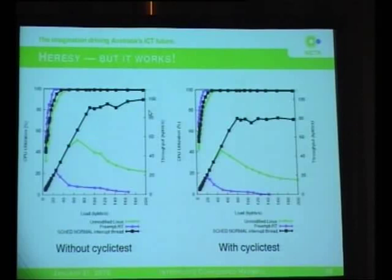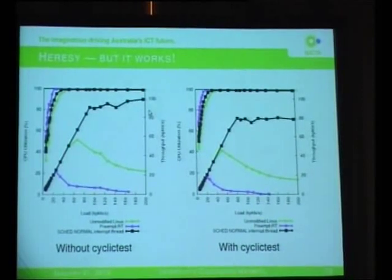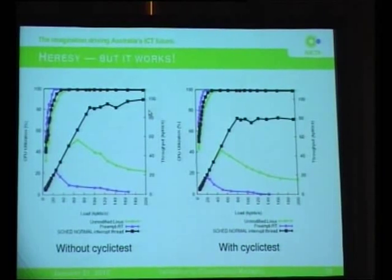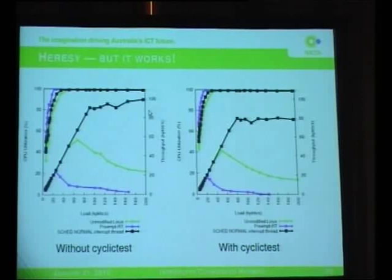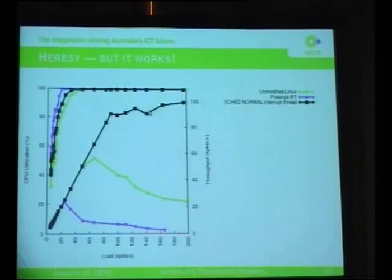This means that cyclic test is now the only real-time task and theoretically it should get good latencies. And we got a hundred kilopackets per second - that is really neat. In the un-overloaded system, the curve tracks the original curves exactly. With cyclic test running, the peak is about 80 kilopackets per second, because cyclic test is taking some of the CPU time. This line is approximately flat, which is exactly what we expect in the theoretical case.